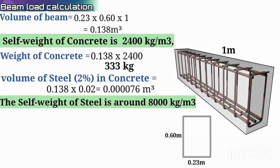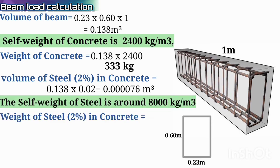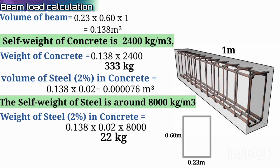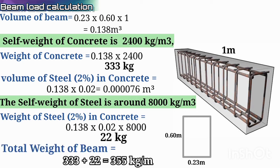We know that the self-weight of steel is around 8000 kg per cubic meter. So the weight of the steel is 0.138 × 0.002 × 8000. Simply, 0.000276 cubic meters × 8000 gives you 22 kg. So 22 kg is the weight of the steel. The total weight of the beam is the weight of concrete plus the weight of steel: 333 + 22, which equals 355 kg per meter.